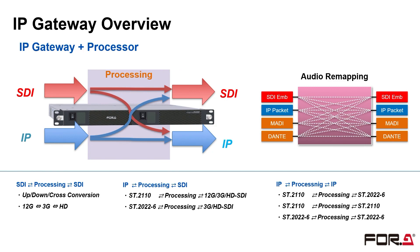The FA1616 can be used as an IP gateway. It can perform not only simple conversion between IP and SDI, but also up-down cross-conversion, color correction, and other processes at the same time. It also allows mapping freely between the various audio interfaces.